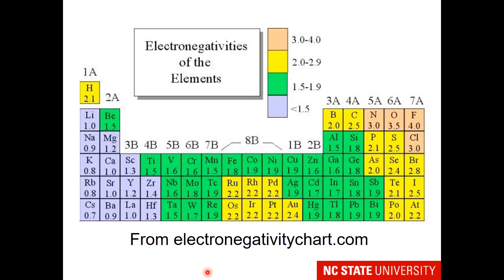Here is a chart from electronegativitychart.com. The values aren't quite the same as those in our textbook, so please use our textbook values for calculating bond polarity. What I like about this chart is that it has some general groupings for electronegativities. Low electronegativity materials are on the left and are mostly metals, but some metals have higher electronegativity, especially as we move toward the right of the periodic table — there is even a group of metals with very high electronegativity comparable to nonmetals.